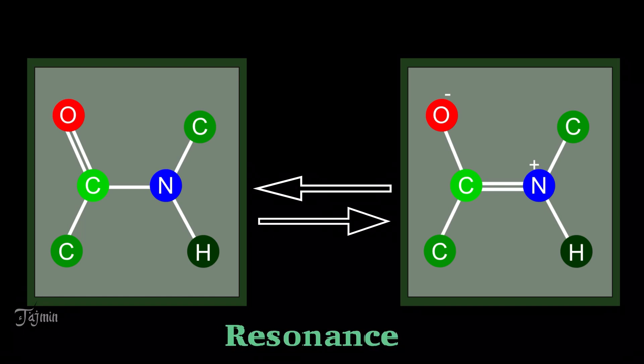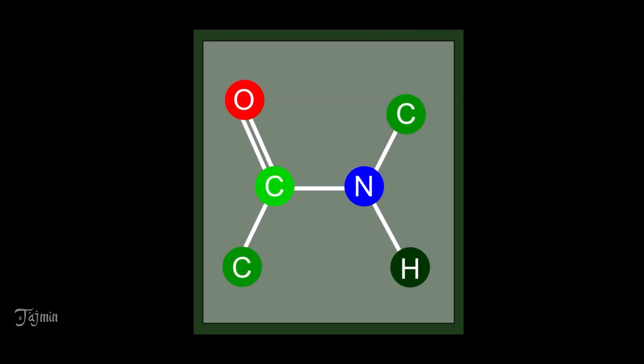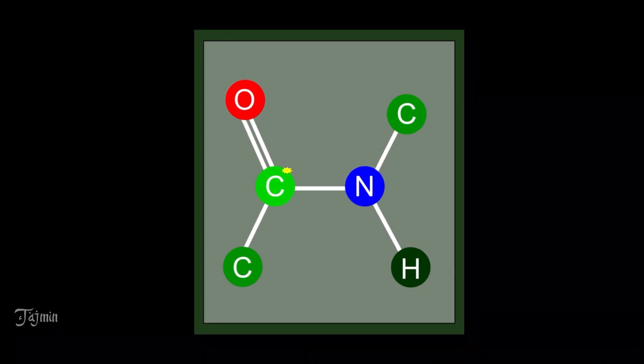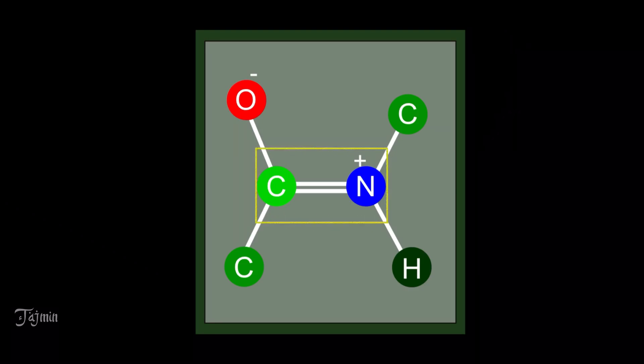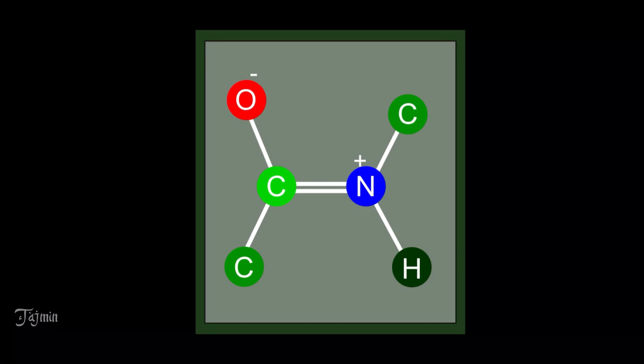The peptide bond has a partial double bond character due to the resonance. The nitrogen donates its lone pair of electrons to the carbonyl carbon and the C double bond O electrons are pushed towards oxygen atom. This results in a double bond formation between the nitrogen and the carbonyl carbon. And also two charged species are formed, a positively charged nitrogen and a negatively charged oxygen.